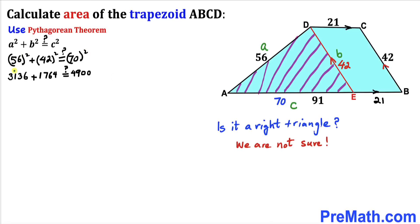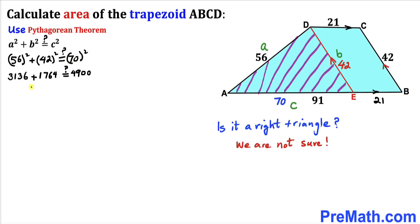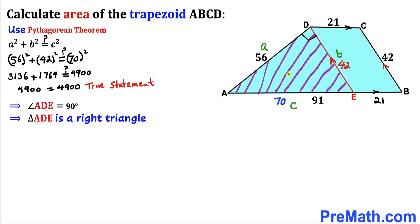We know that 56 squared is 3136, 42 squared is 1764, and 70 squared is 4900. Adding the left-hand side: 3136 plus 1764 equals 4900, which equals the right-hand side. This is indeed a true statement, so we conclude that triangle ADE is a right triangle with angle ADE equal to 90 degrees.